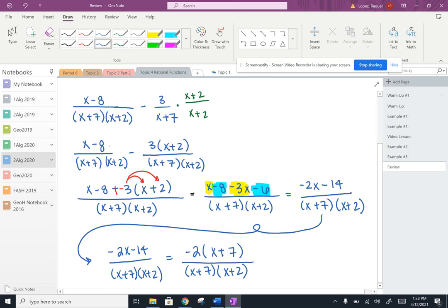Now, to simplify, I notice that I have an x plus 7 in the numerator and denominator, so those are going to reduce to 1. And so my final answer is going to be negative 2 all over x plus 2.